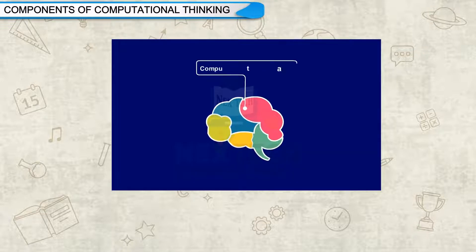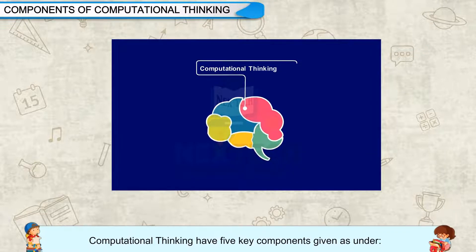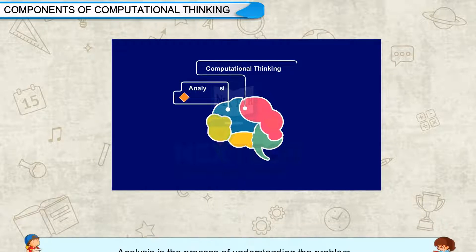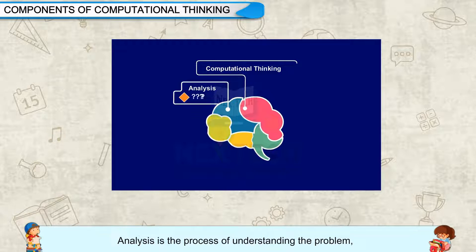Components of Computational Thinking: Computational Thinking has five key components. The first is Analysis — the process of understanding the problem with the given conditions and constraints, and defining the goals.